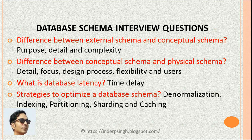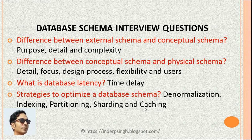The next question is: what are the common strategies to optimize a database schema? These include: denormalization, meaning combining tables to reduce the joins needed for queries; indexing, meaning creating indexes on frequently queried columns in a table; partitioning, meaning the division of a large table into smaller partitions — each partition can be stored on a separate disk and read in parallel, which improves query performance; caching, which means storing frequently accessed data in memory at the database, application, or query level; and sharding, which means distributing data across multiple servers to improve performance.